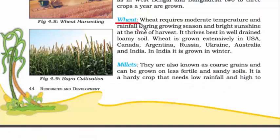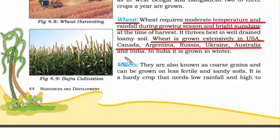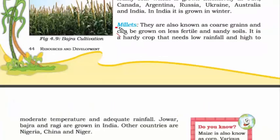Wheat requires moderate temperature and rainfall during the growing season and bright sunshine at the time of harvest — all of these conditions are present in India. Some of the wheat-producing nations are USA, Canada, Argentina, Russia, Ukraine, Australia, and India. In India, we grow wheat during winter.